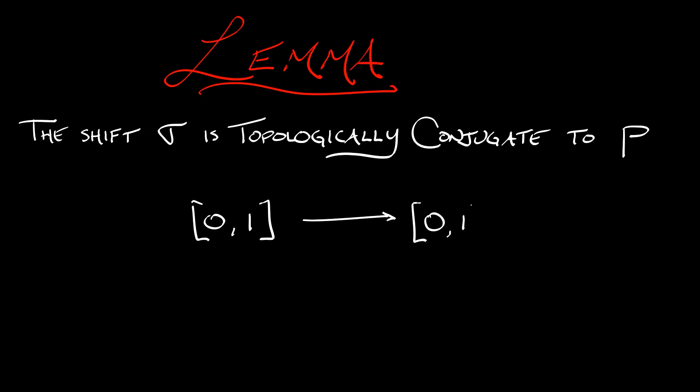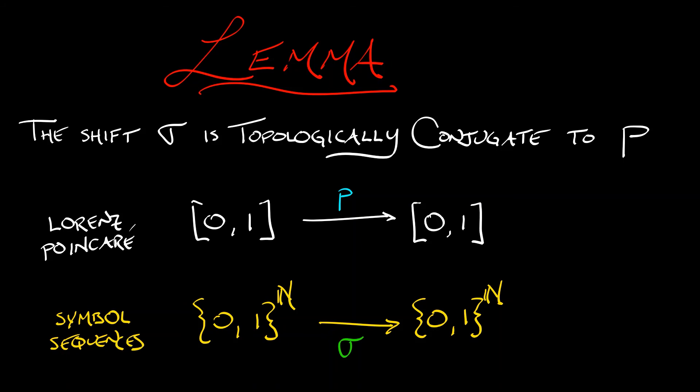But here's the idea, it's really simple. We have our map p, 2x mod 1, on the interval from 0 to 1, so that one we know, that makes sense. But we also have the space of binary decimals and we have the shift map on that space. So up above I've got the Poincaré map for the Lorentz, the geometric Lorentz attractor, and then down below I have the space of symbol sequences with a shift.